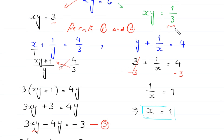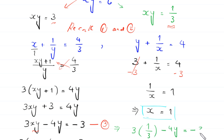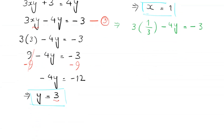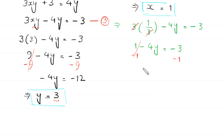Now in equation 3 we put xy equals 1/3: 3 times 1/3 minus 4y equals negative 3, which gives 1 minus 4y equals negative 3. Subtracting 1 from both sides: negative 4y equals negative 4, which implies y equals 1.